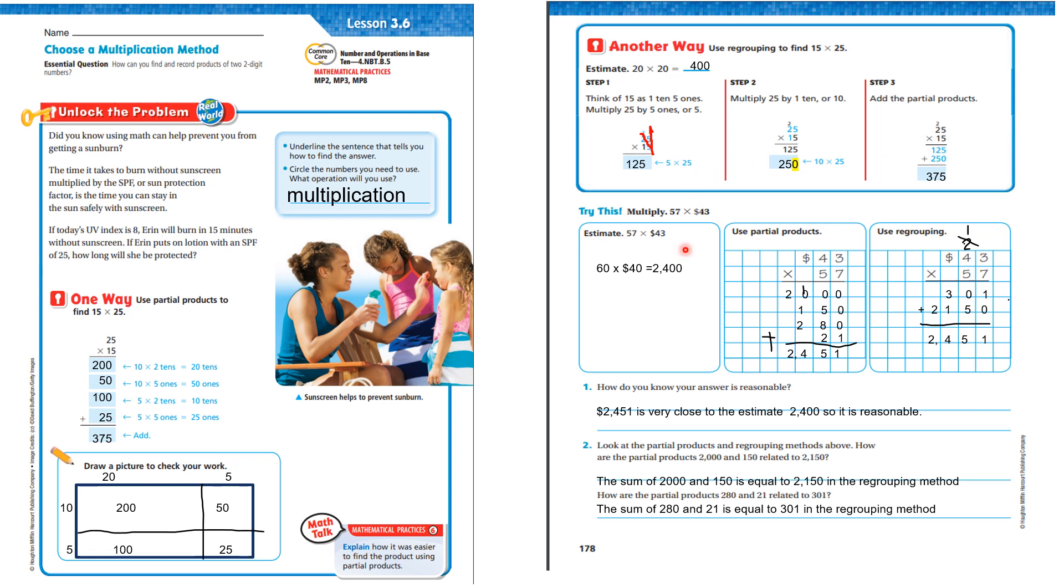Now let's try this. Multiply 57 times 43. I can go 60 times 40 is 2,400 as my estimate. I can use the partial product. 43 times 57. First, I'm going to go 50 times 40 is 2,000. Now, I'm going to go 50 times 3 is 150. I'm going to go 7 times 40 is 280 and 7 times 3 is 21. Add it together, I get 2,451.